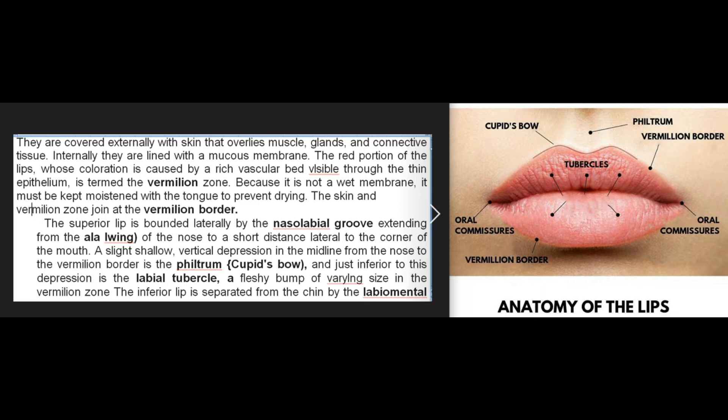Internally the lips are lined with a mucous membrane. The red portion of the lips, whose coloration is caused by a rich vascular bed visible through the thin epithelium, is termed the vermilion zone. Because it is not a wet membrane, it must be kept moistened with the tongue to prevent drying. The skin and vermilion zone join at the vermilion border.